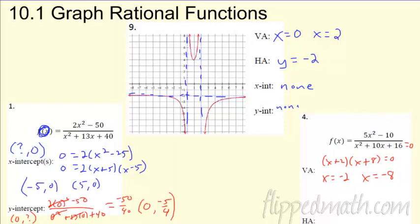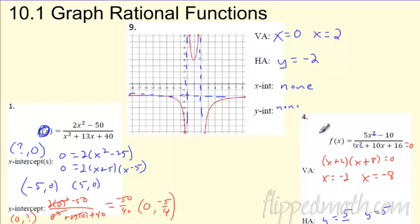For horizontal asymptotes, remember the rules — you're comparing the degree on top versus the degree on bottom. If the degree on top is bigger, there isn't one. If the degree on the bottom is bigger, the horizontal asymptote is y equals zero. If the degrees are the same, take the coefficients of the highest powers: here it's five over one, so the horizontal asymptote is y equals five.